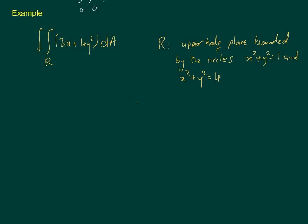Let's look at this example. We have the integral of 3x plus 4y squared dA, where the region R is the upper half plane bounded by the circles x squared plus y squared equals 1 and x squared plus y squared equals 4. The upper half plane means above the x-axis. So we have a circle of radius 1 and a circle of radius 2, giving an annular region in the upper half plane.